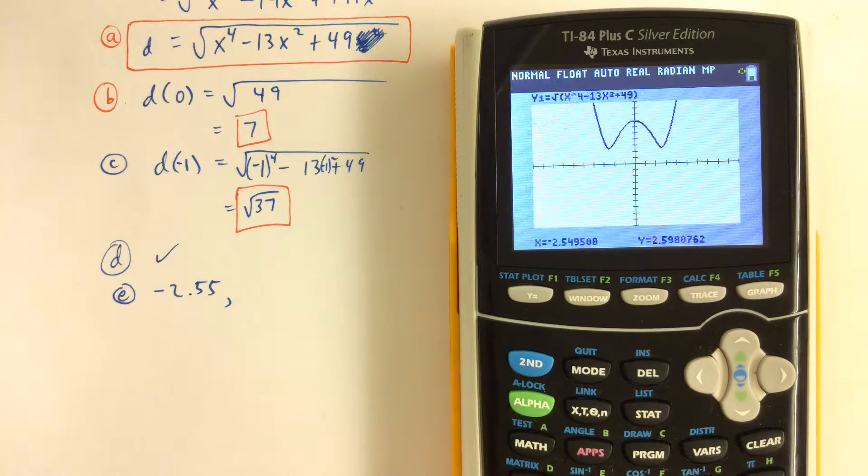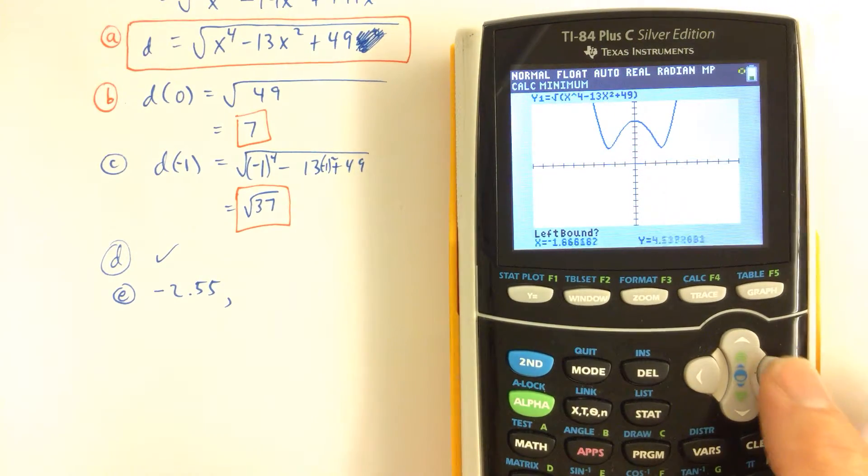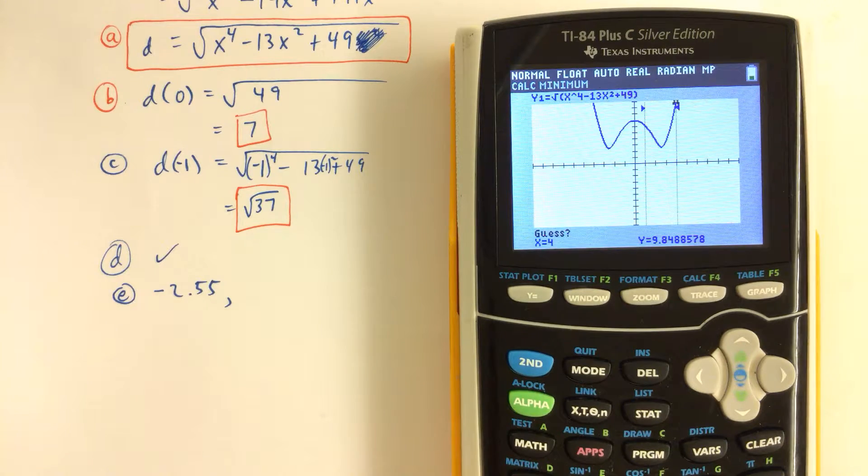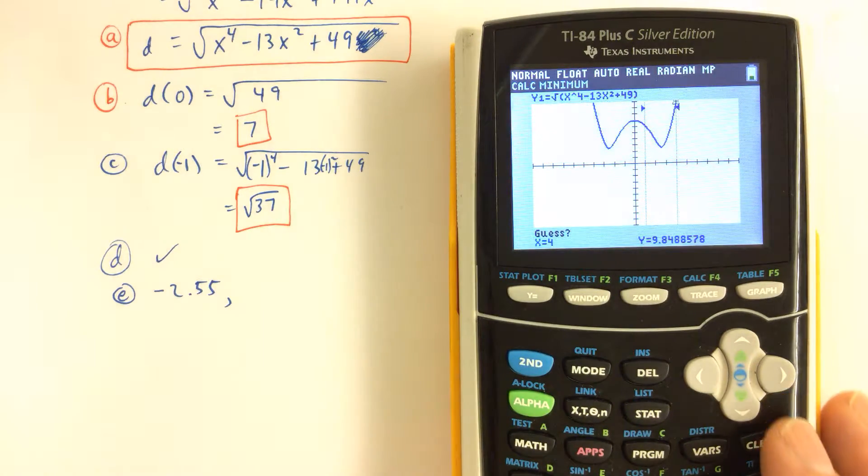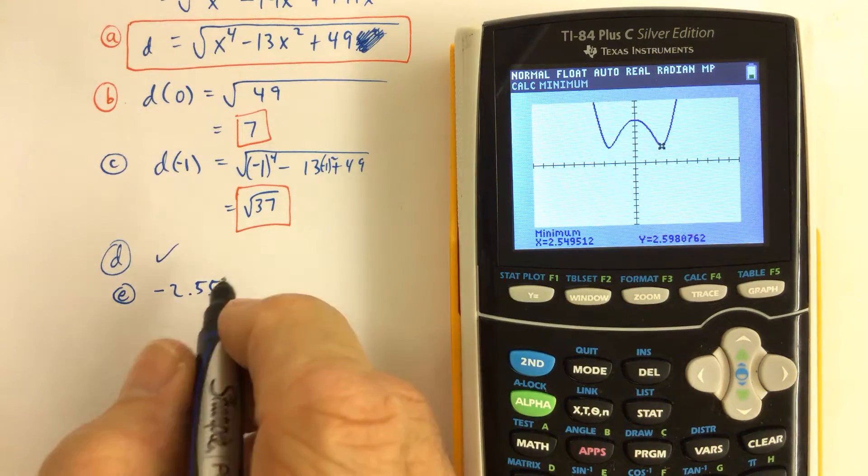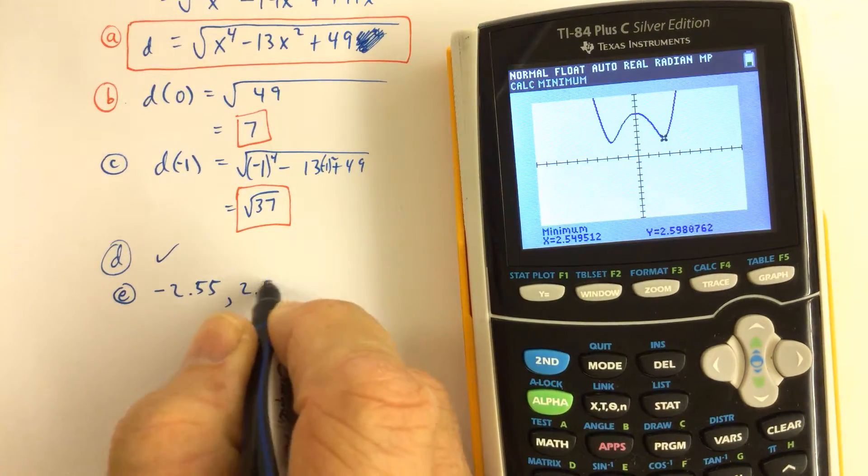Second calculate minimum, number 3, and we move the cursor over. Here's a quicker way to do it: left bound type 1, Enter, right bound type 4, Enter. So you can just type a number and it'll mark it, and then if you guess, let's guess 3, somewhere in between 1 and 4, and sure enough, we have 2.55 as well, 2.55.